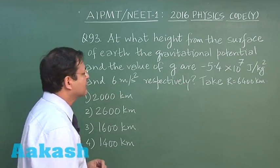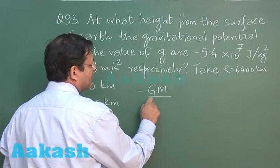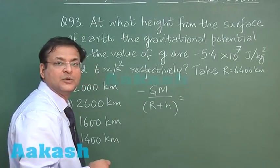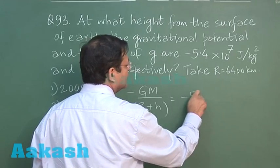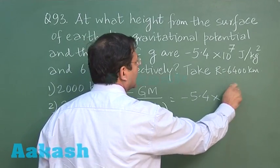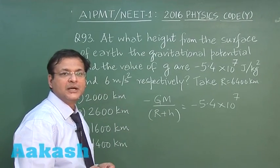This is a kind of formula. You use the formula of gravitational potential as minus GM upon r plus h. This will be giving you the value minus 5.4 into 10 to the power 7 as has been given to you, and the value of acceleration due to gravity can also be called gravitational field intensity, so the expression is minus GM by r plus h whole square.